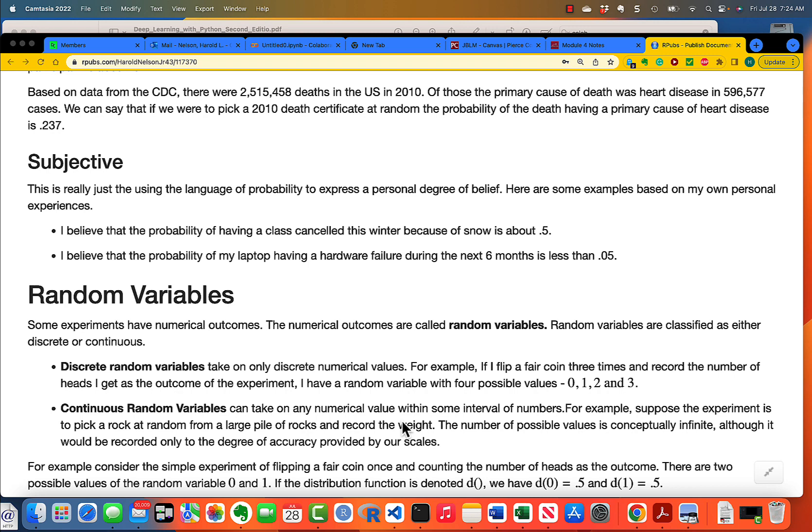So, now we turn to something more theoretical. Random variables. What is a random variable? In the case of a random variable, you've got an experiment with numerical outcomes. And the numerical outcomes are called random variables. And you classify random variables as either discrete or continuous. And there are very different ways of handling these two types of random variables.